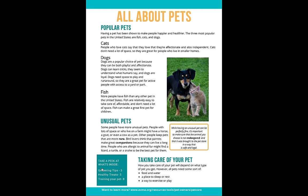This teal box here that says 'Take a peek at what's inside' — grooming tips, page three; healthy treats, page five; training your pet, page eight — this is a table of contents. So if this 'All About Pets' page is the first page of a magazine, this little box is telling us what to expect in the rest of the magazine and what page numbers we can find all of these other articles on.